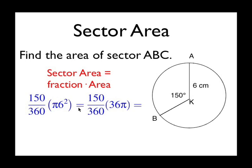So pi times 6 squared, which is 36 pi. 150 over 360, that's again coming from the central angle. Over 360, I want 150 degrees of the whole 360.